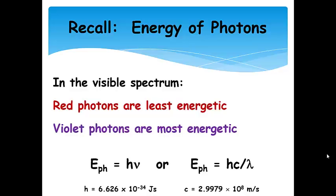In the visible spectrum, red photons are the least energetic. They have the longest wavelengths, and violet photons are the most energetic. They have the shortest wavelengths out of the ones that we can see.